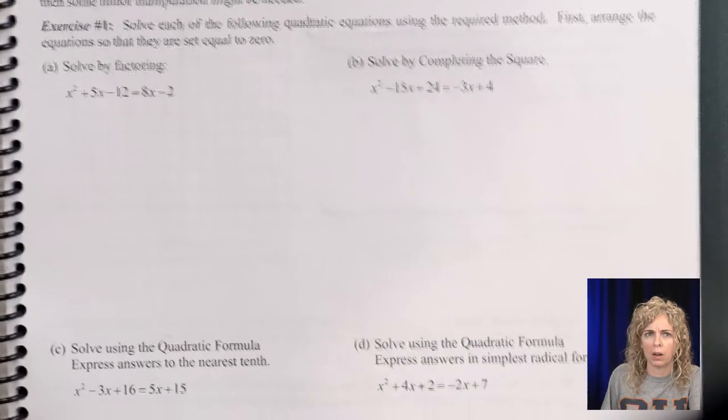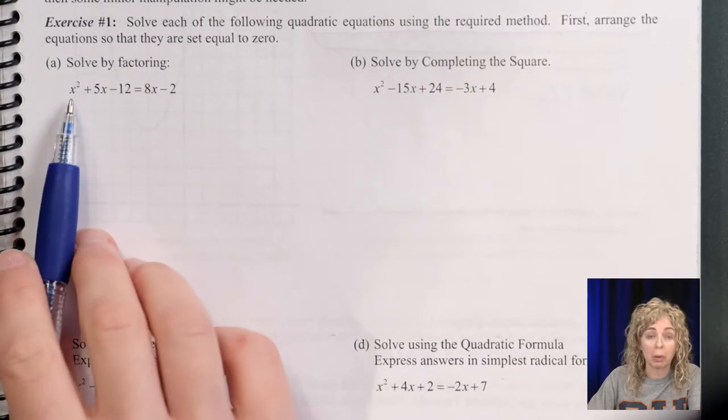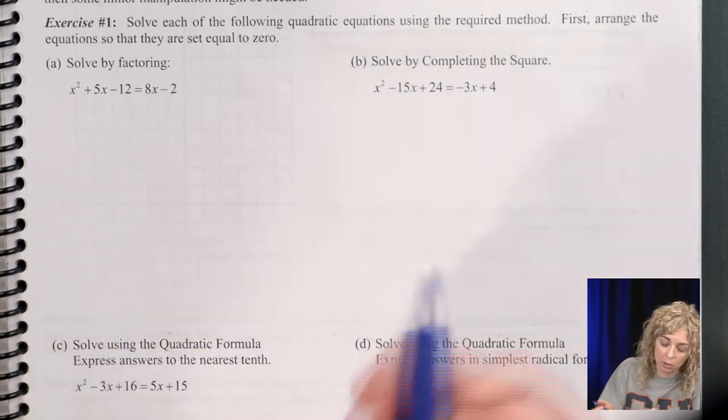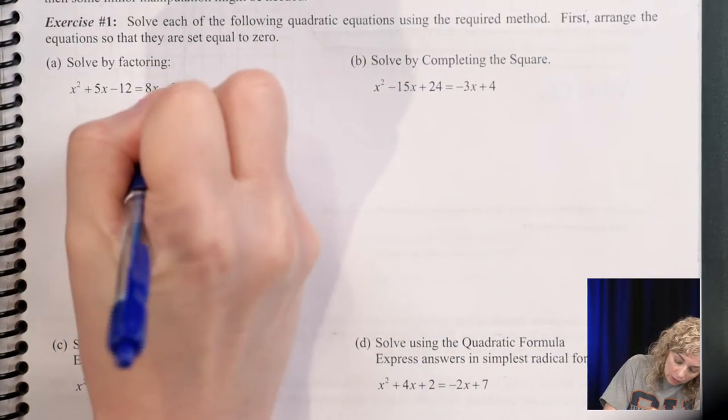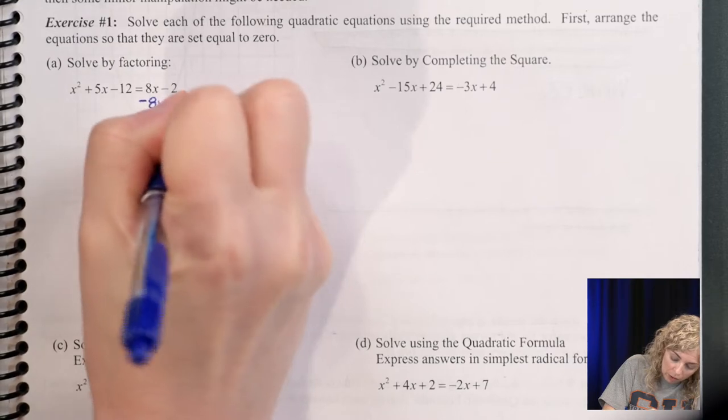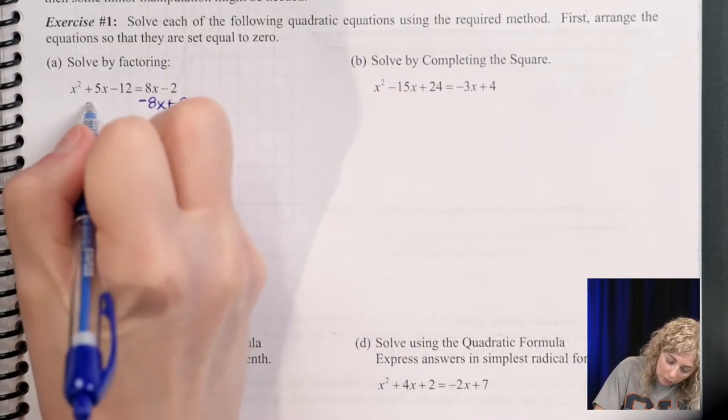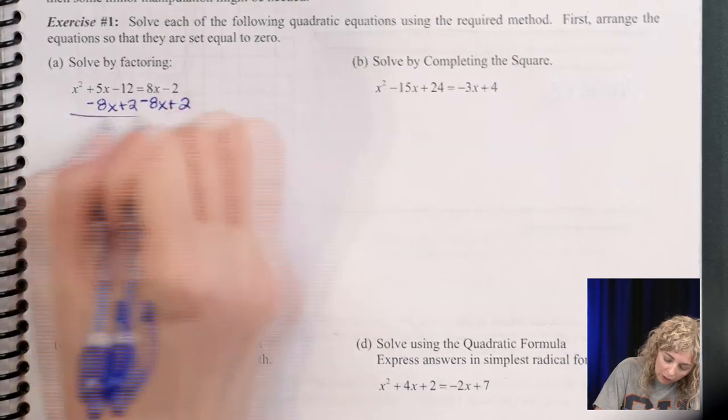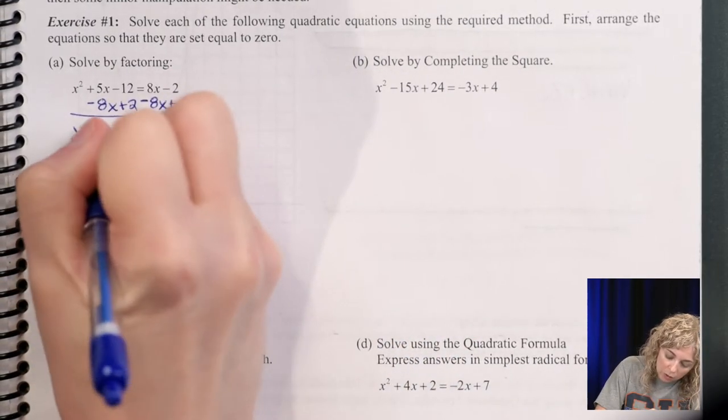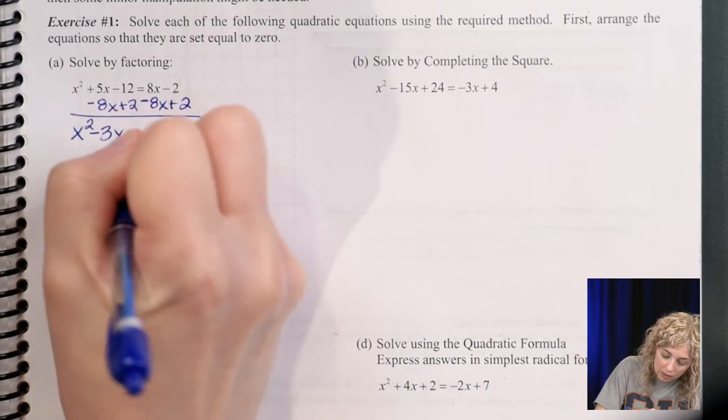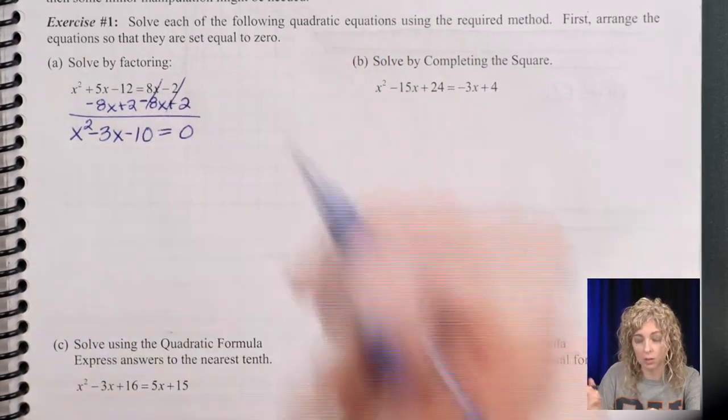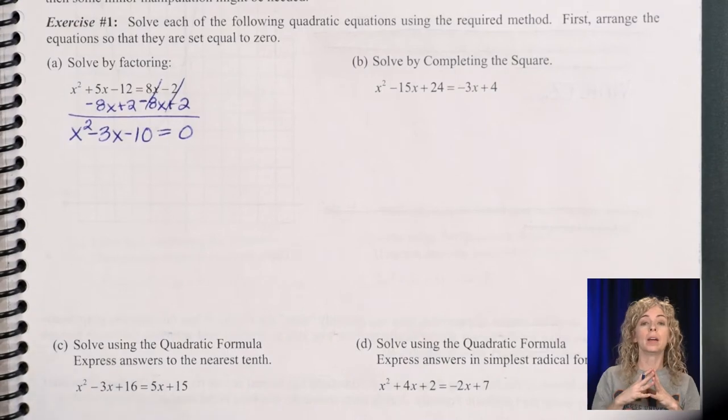So let's start by reviewing factoring because it's been a while. We want the x squared positive. So I'm going to subtract the 8x and then add the two all in one step so it's less writing. So I'm solving by using inverse operations. And then I combine them over here or stack them with their like term. So we end up with x squared minus 3x minus 10 equals zero.